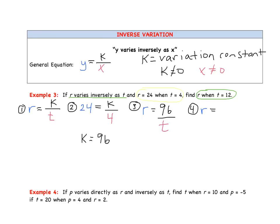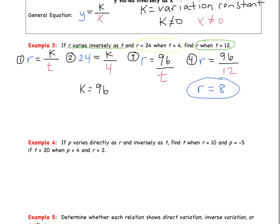Step 4: solve for R when T equals 12. R equals 96 divided by 12, which gives R equals 8. Now let's move on to Example 4, which involves combined variation.